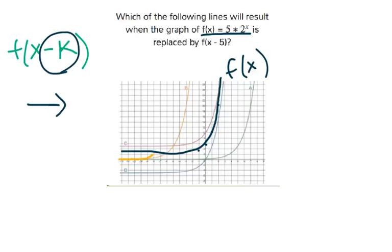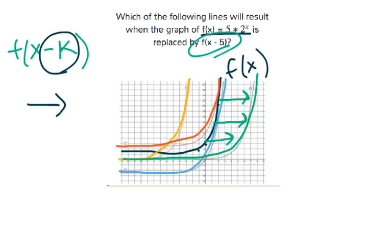So it looks like out of these lines—the yellow line, the red line, the blue line here, and the green line—the one that takes the black line and shifts to the right is the green line there. So the green line represents f(x-5).